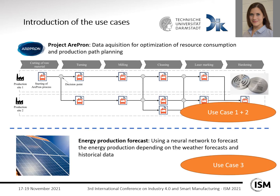Now I will introduce the use cases. On the one hand, we have Aribron — a project for agile resource-efficient production networks. This production network contains different production steps commonly used in industry. We have data acquisition for optimization of resource consumption and production path planning as use cases one and two. Use case three is the energy production forecast, using a neural network to forecast energy production depending on weather forecasts and historical data.